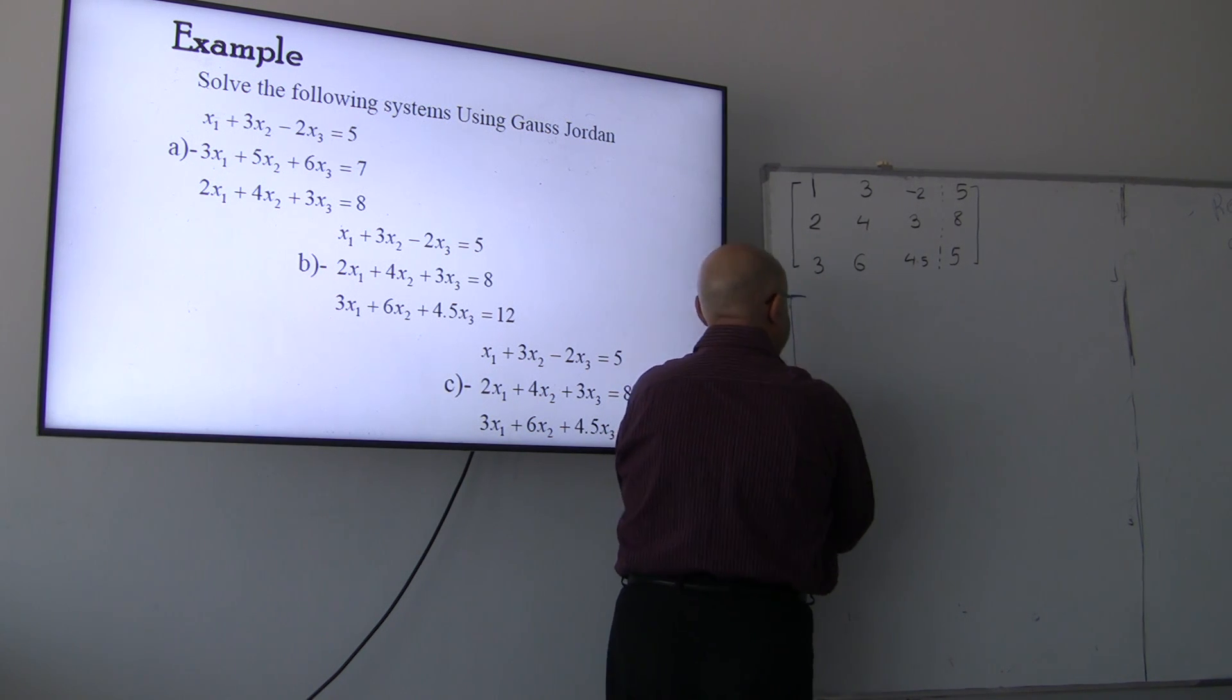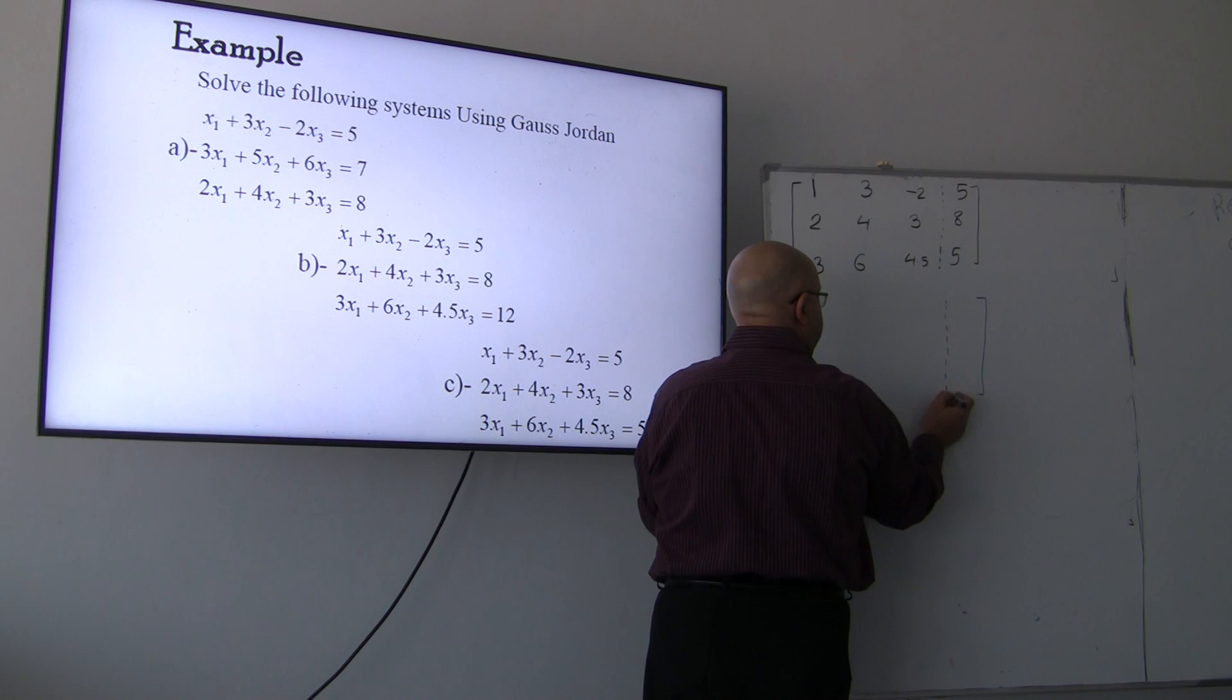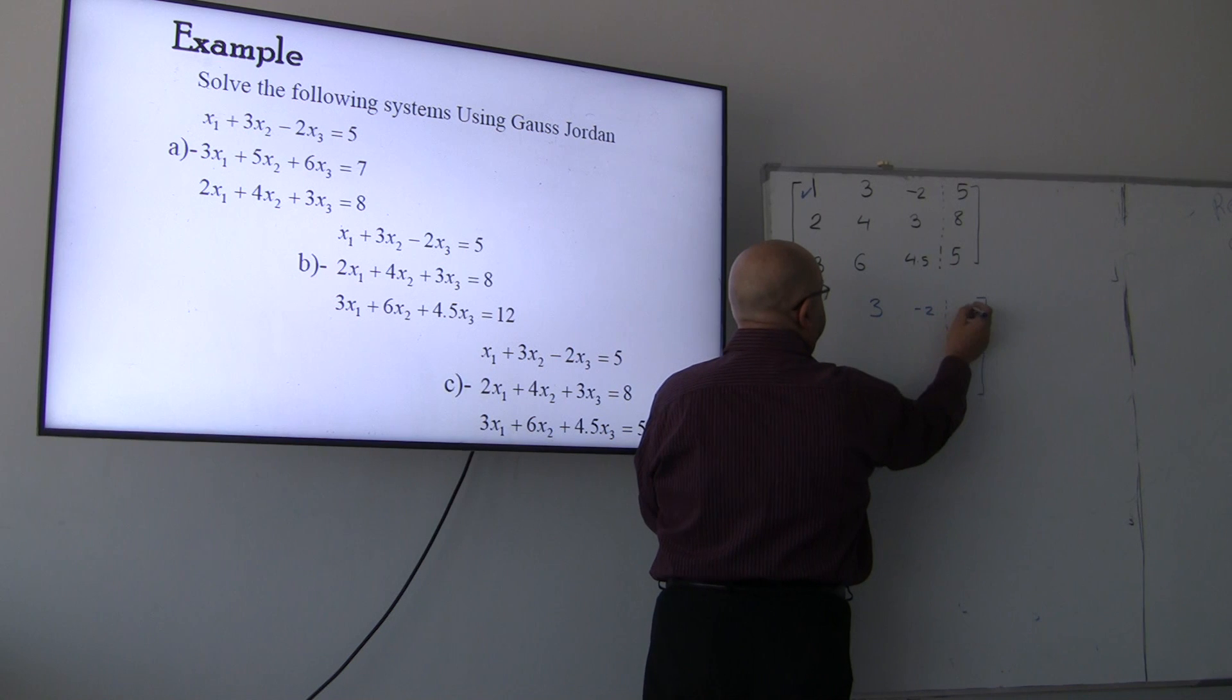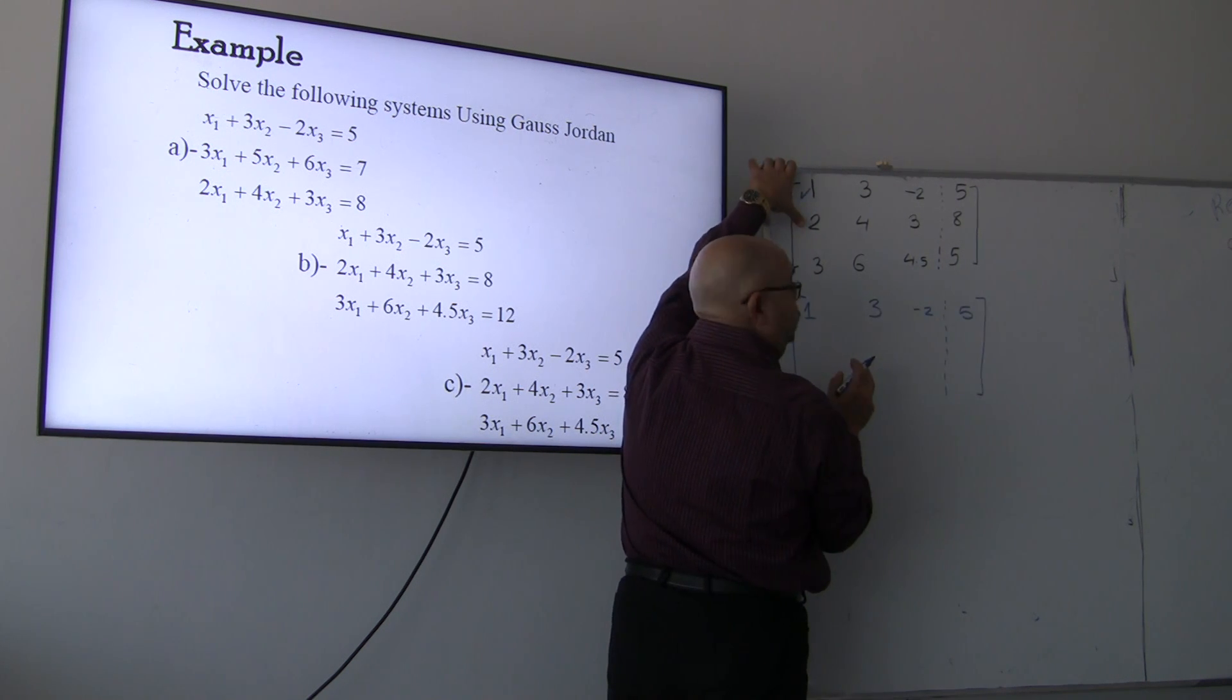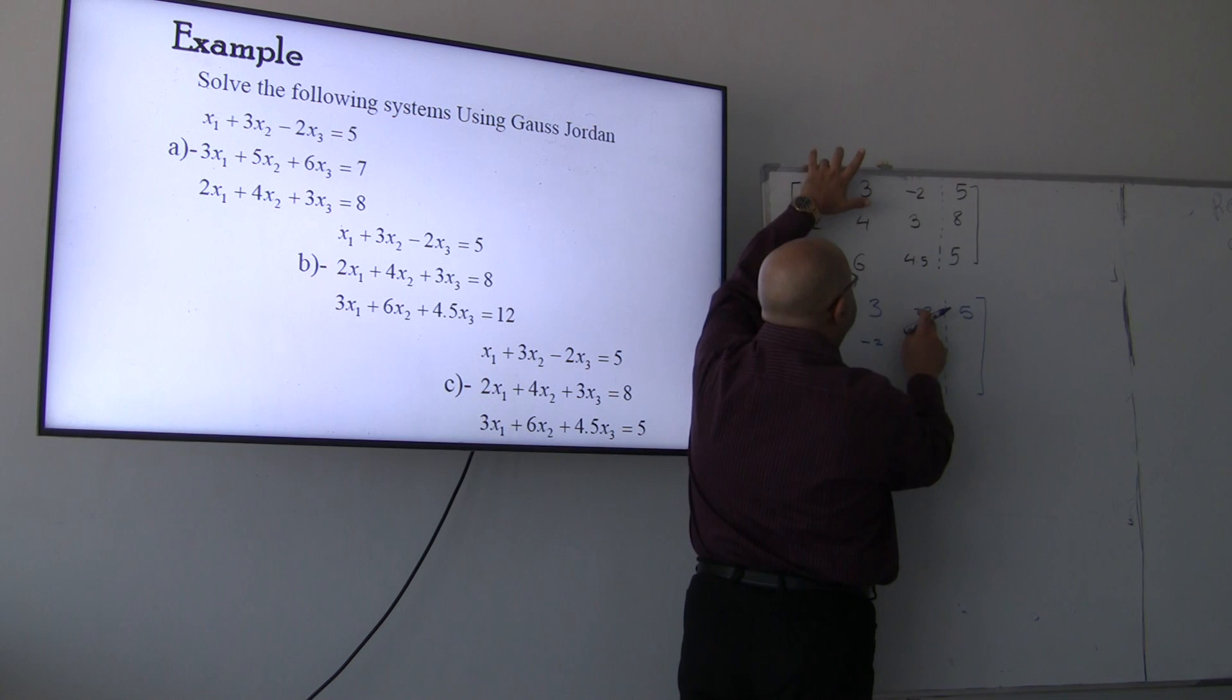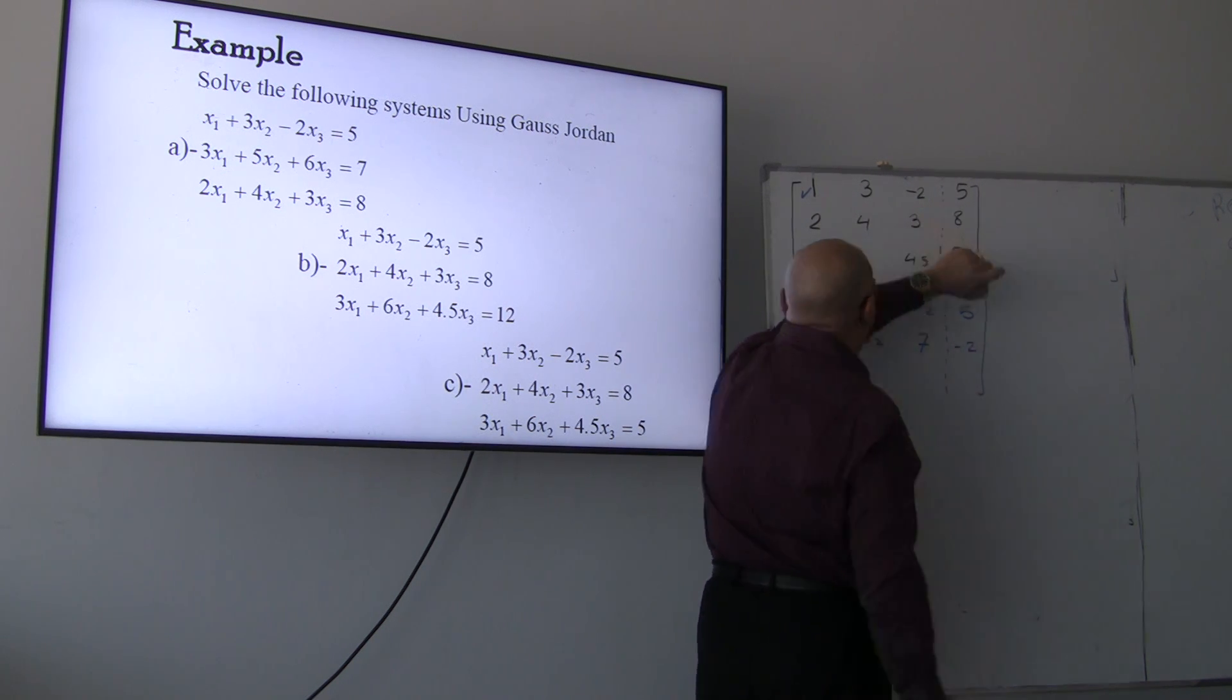I will start. I need the first element in the first row and column equal to one. So it's a one, three, negative two, and five. I will need this value to equal to zero. So, simply, I will multiply the first row by negative 2, and then I will add it to the second. Negative 2 plus 2 is going to equal to 0. Negative 2 times 3 is going to be negative 6 plus 4, negative 2. Negative 2 times negative 2 is 4, plus 3 is going to be 7. Negative 2 times 5 is negative 10, plus 8, so it's going to be negative 2.